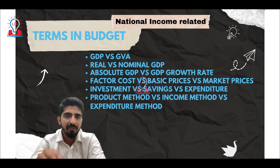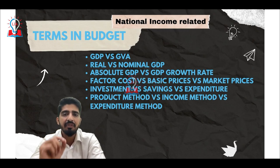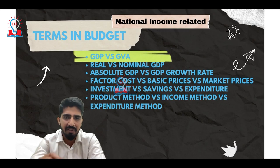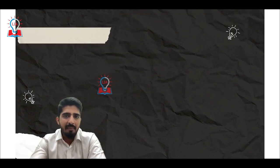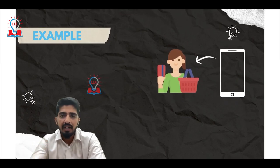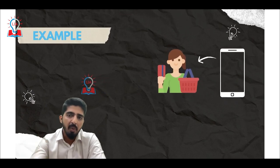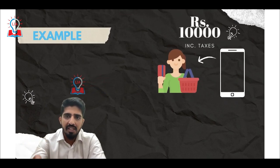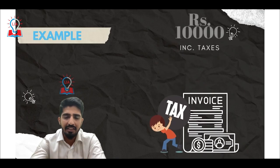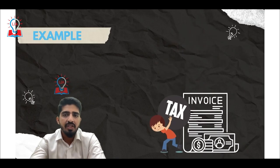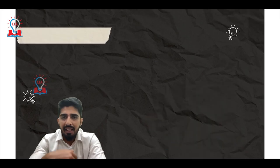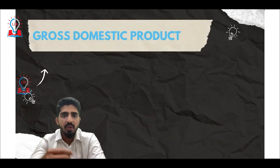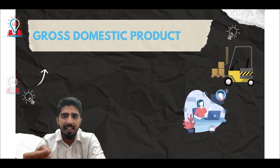However, this particular video is going to be focusing on the difference between GDP and GVA only. So let's take an example whereby a consumer buys a mobile phone for 10,000 rupees. Extrapolating the same example to the national level, we call it the GDP.